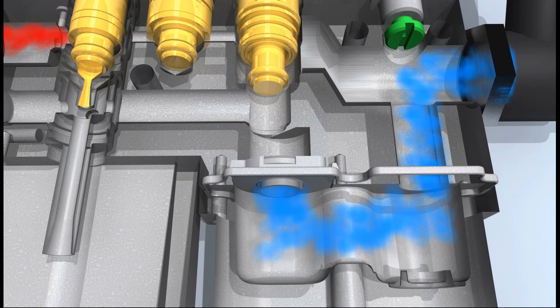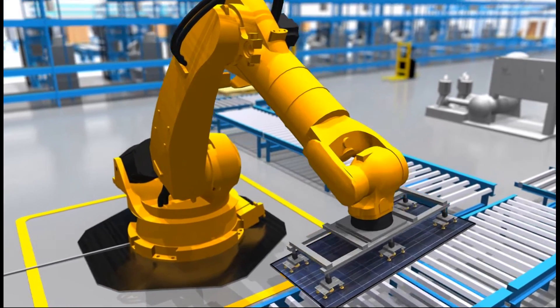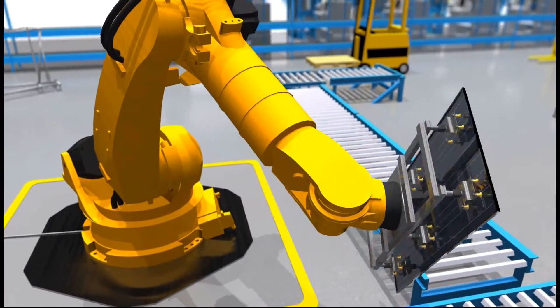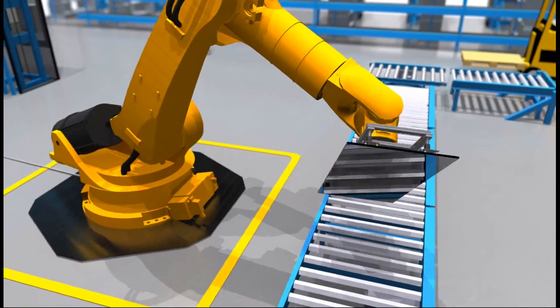The gripper can hold the component part as long as needed, without more air flowing over the Venturi injector. That saves energy.